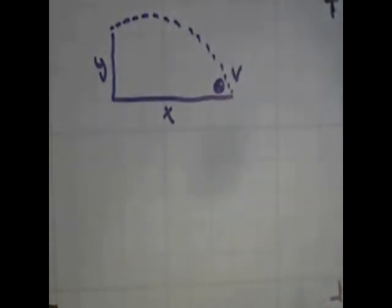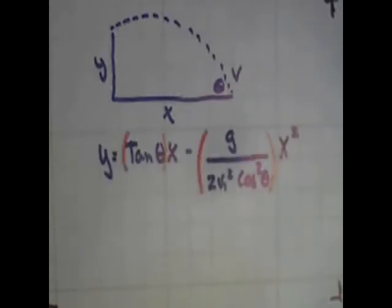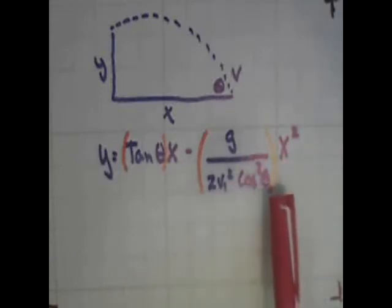This type of physics problem requires the range equation for objects that are not landing at the same spot they're launched at. That equation is y equals tangent theta times x minus g divided by 2vi squared cosine squared theta, all times x squared. Looks like a lot of variables, so we will have derived this already.